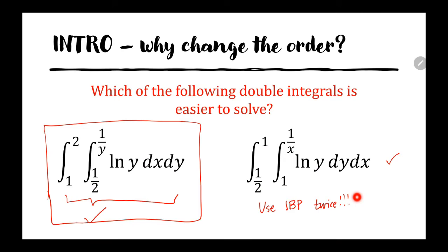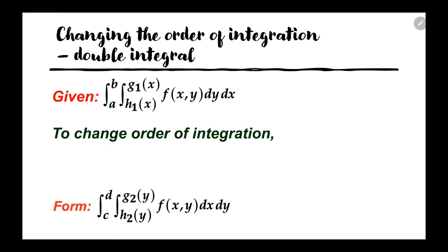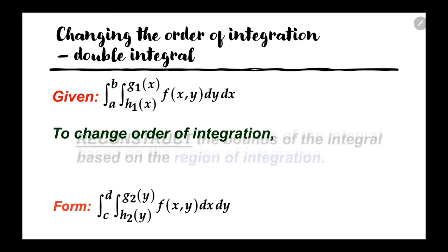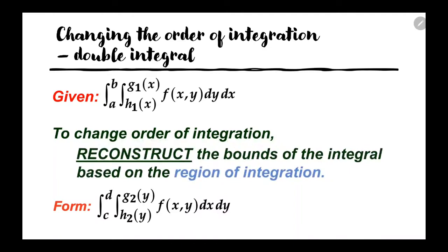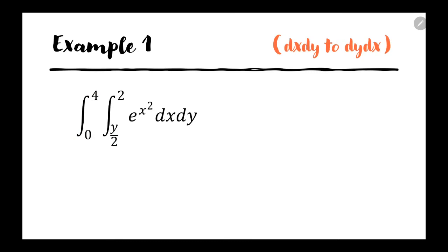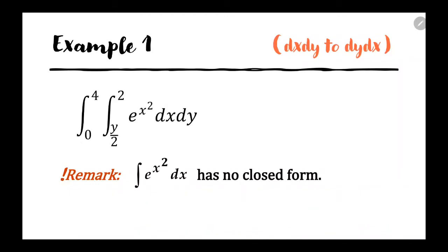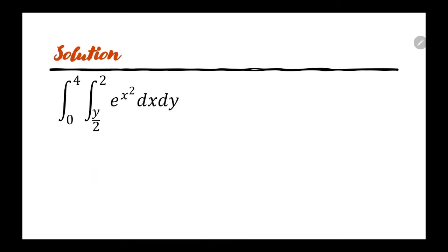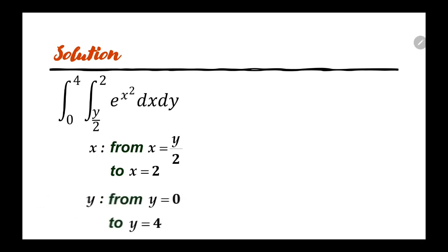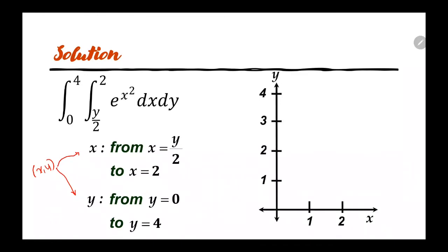Given a double integral of order dy dx, if we want to change the order of integration to dx dy, we need to reconstruct the bounds of the integral based on the region of integration. We have seen that the integral of e raised to x squared dx has no closed form, so it is better to change the order of integration. We read this as the double integral of e raised to x squared where x ranges from y over 2 to 2, and y ranges from 0 to 4. We draw the line x equals y over 2 (or y equals 2x) and the line x equals 2.